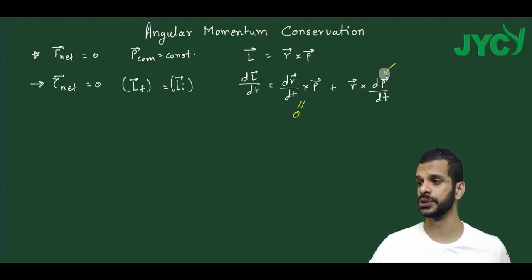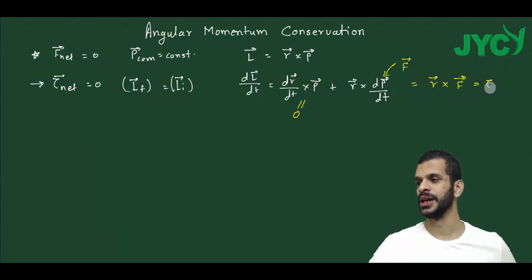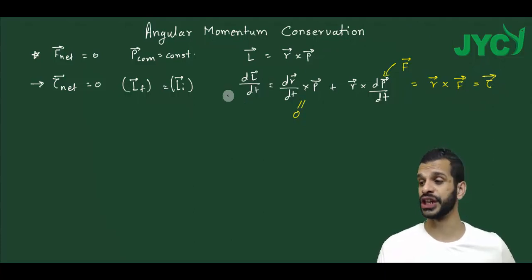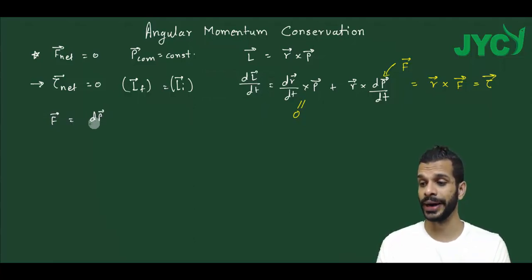The remaining term is r-bar cross dp/dt. The rate of change of momentum dp/dt is force. So we get r-bar cross F-bar, which is torque. Therefore, torque equals the rate of change of angular momentum — just as force is the rate of change of linear momentum.